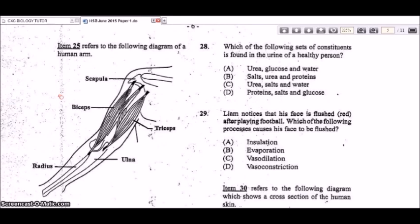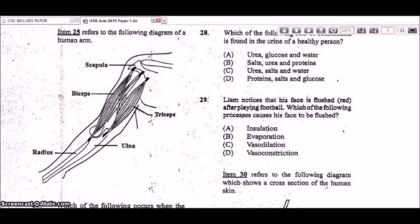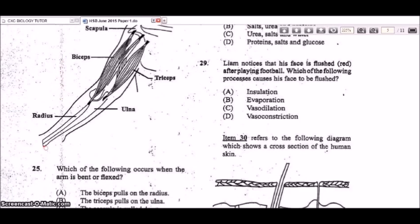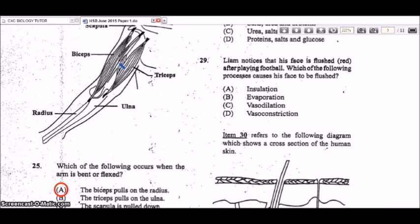Item 25 refers to a diagram of a human arm. Question 25: which of the following occurs when the arm is bent or flexed? The answer is that the biceps pulls on the radius. When the biceps contracts it lifts the arm, pulling on the radius, while the triceps relaxes. When the arm is extended, the triceps contracts while the biceps relaxes — this is antagonistic action.